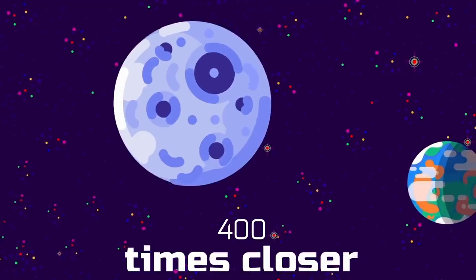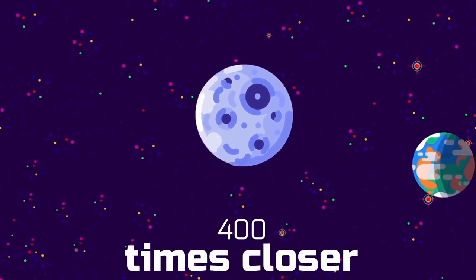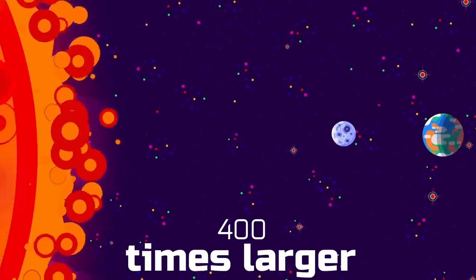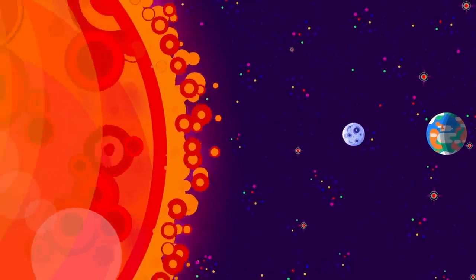The moon is 400 times closer to earth than the Sun and the Sun is 400 times larger than the moon. What does this mean?